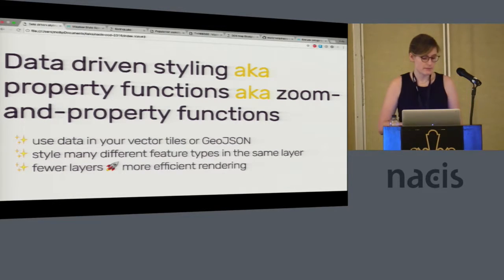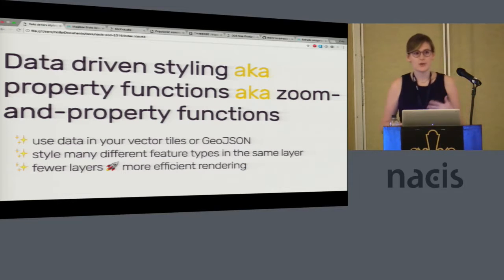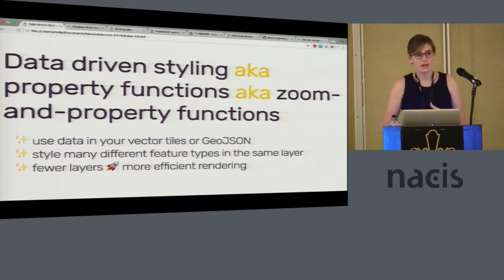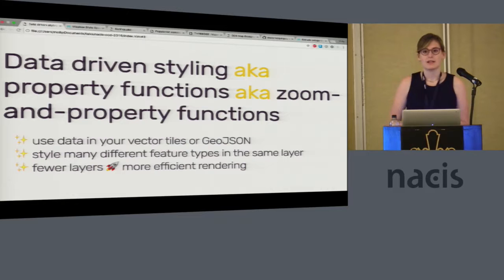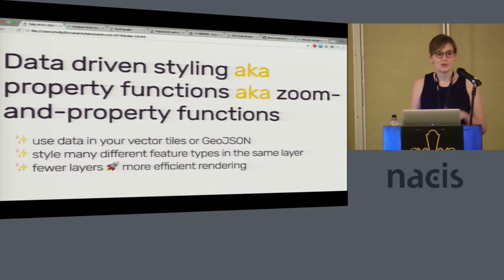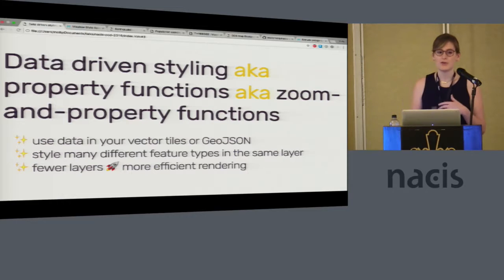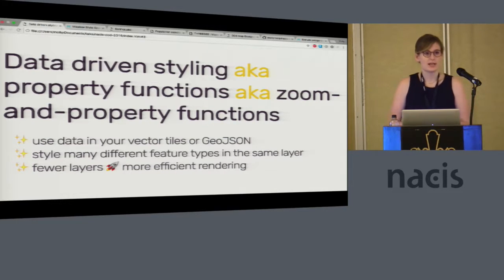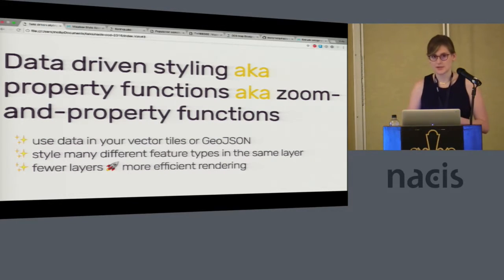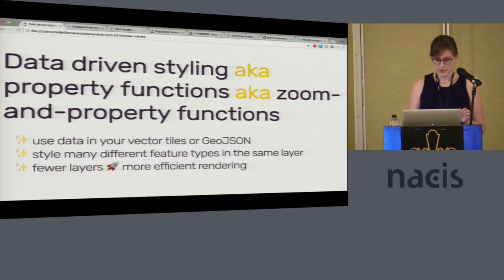One of the major benefits of this is that for every layer you add to your style in the Mapbox GL style spec, it takes a lot of overhead to render that layer, and every frame it's rendering every single layer. So by reducing the number of layers you need, you end up getting better performance, faster maps, and happier users.